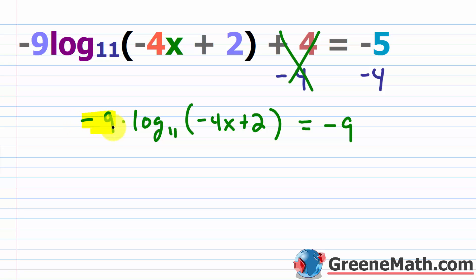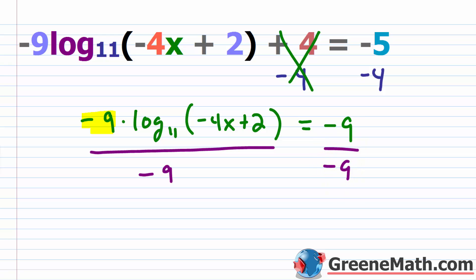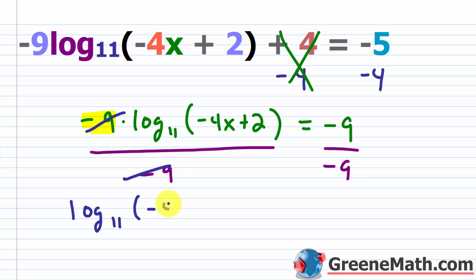To get rid of that — because this is multiplication, I can use division. So I'm going to divide both sides by negative 9, and that'll clean this up further. This cancels, and on the left I'm just going to have log base 11 of negative 4x plus 2. On the right, negative 9 divided by negative 9 is going to be 1.